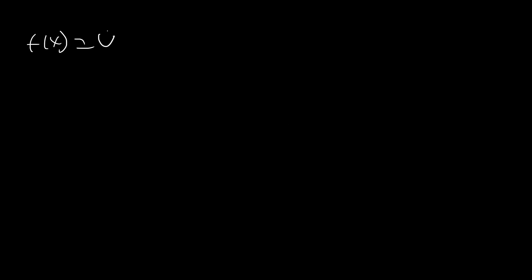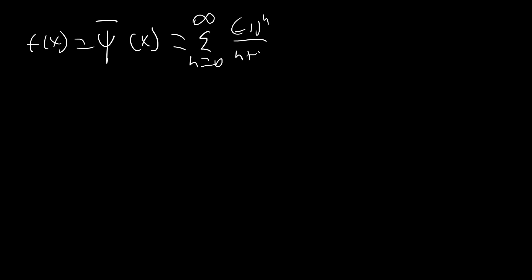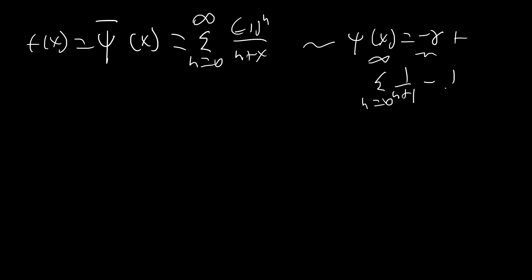So this function, we're going to call it f of x, but I'm also going to call it di gamma bar of x. The reason is that it's very closely related to the di gamma function and its identities really match up with it. It's the sum from n equals zero to infinity of negative one to the n over n plus x. We can see this is similar to how di gamma of x equals negative gamma plus the sum from n equals zero to infinity of one over n plus one minus one over n plus x.